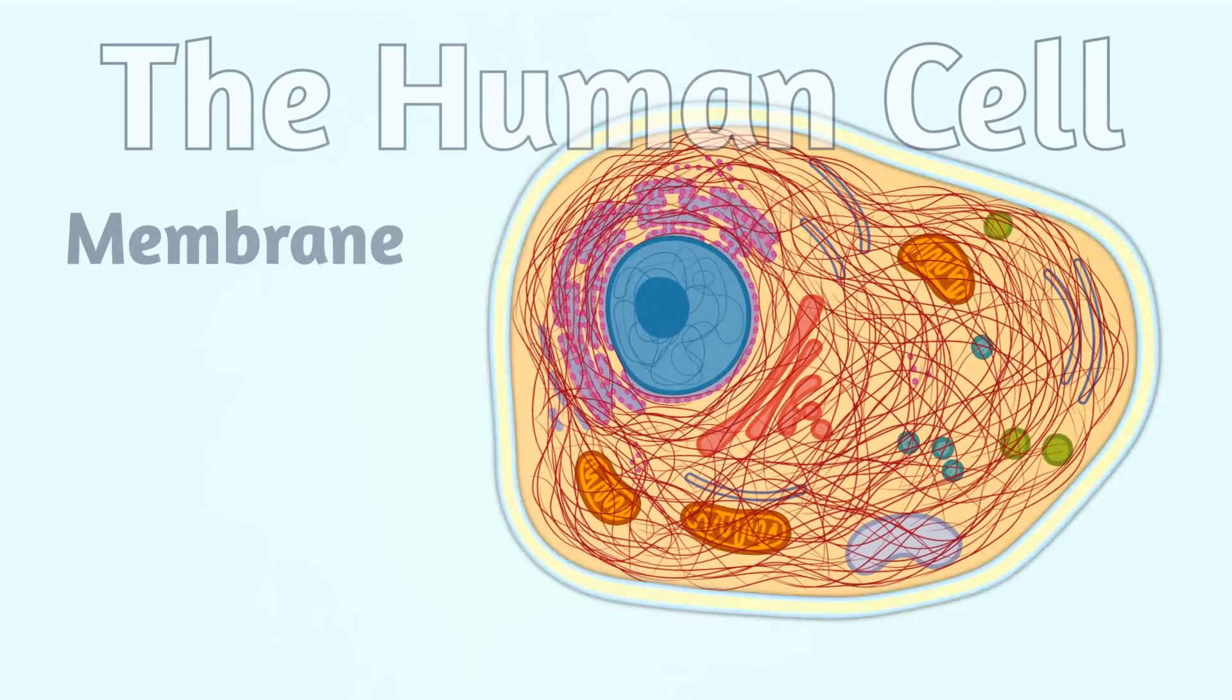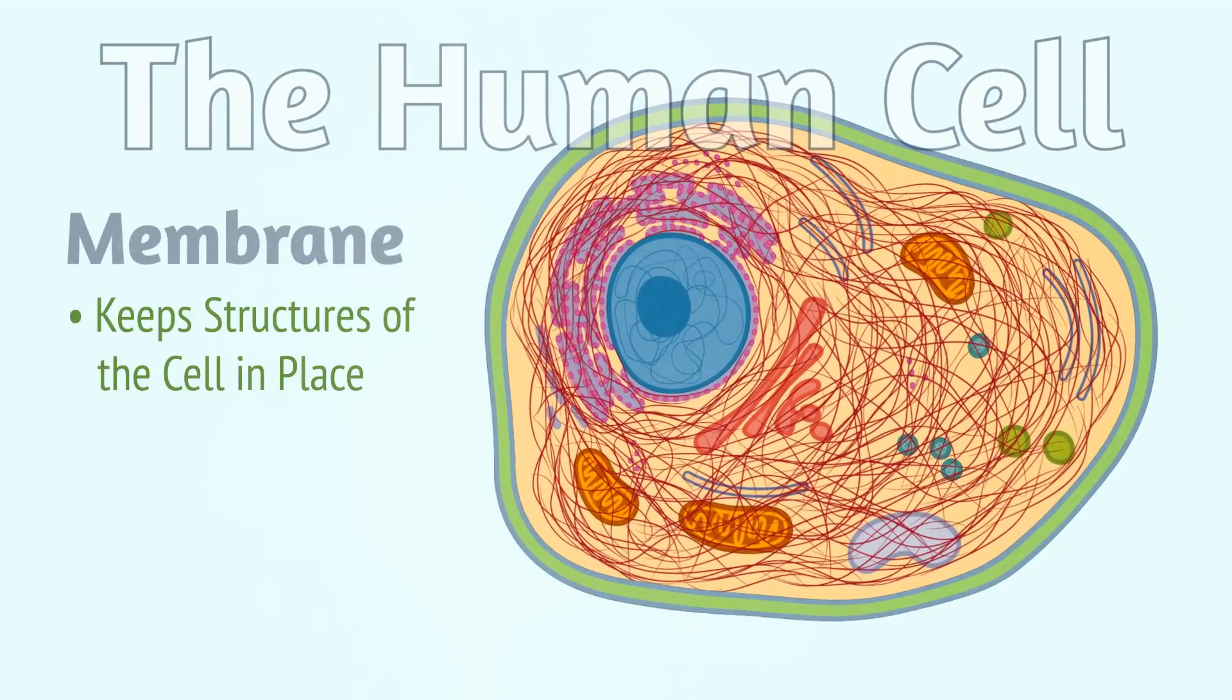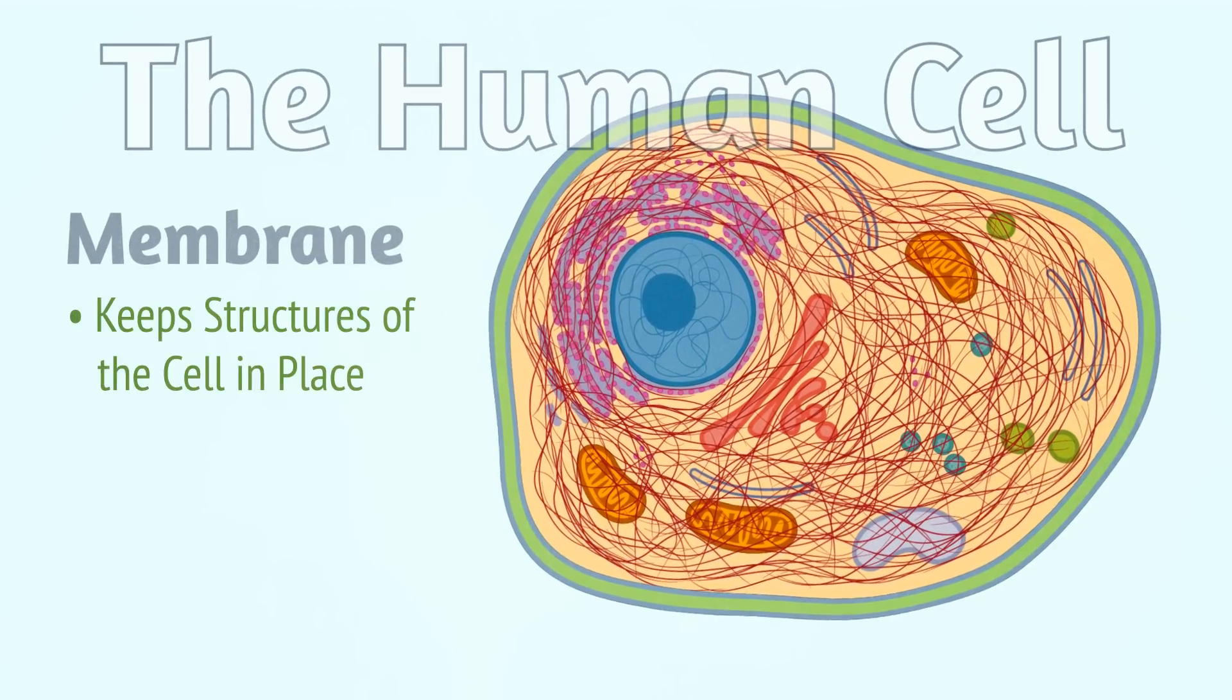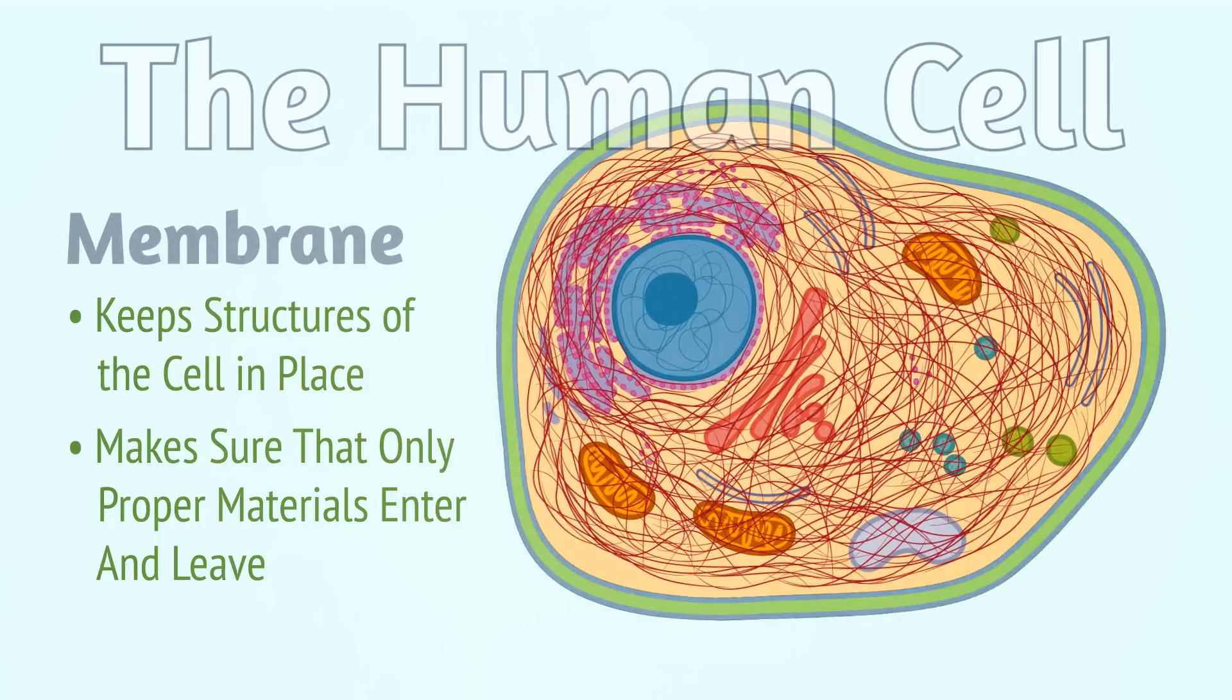A membrane surrounds the cell, keeping all the structures of the cell in place as well as making sure that only the proper materials enter and leave.